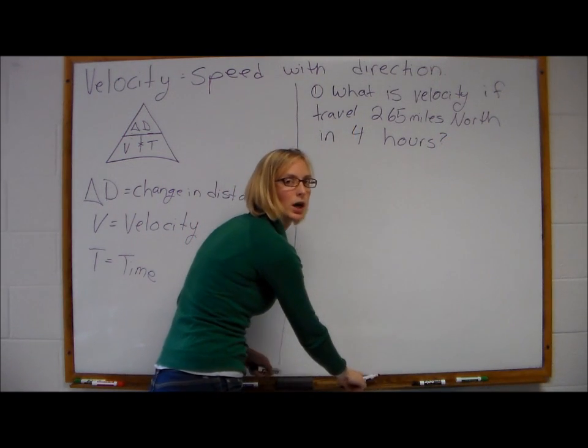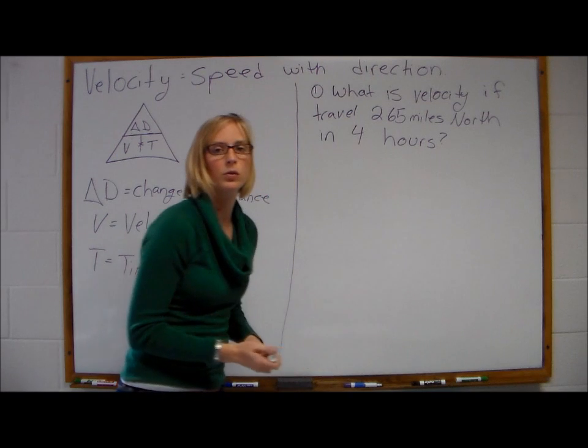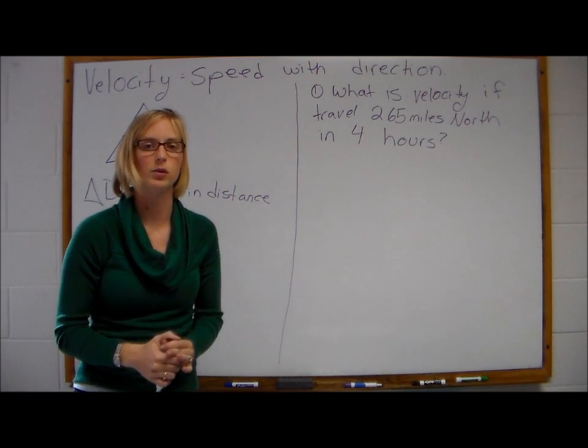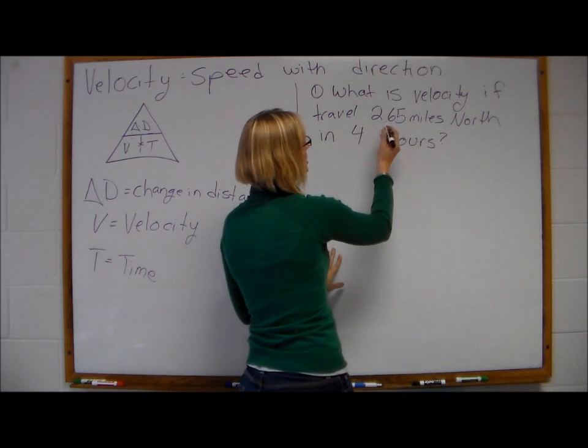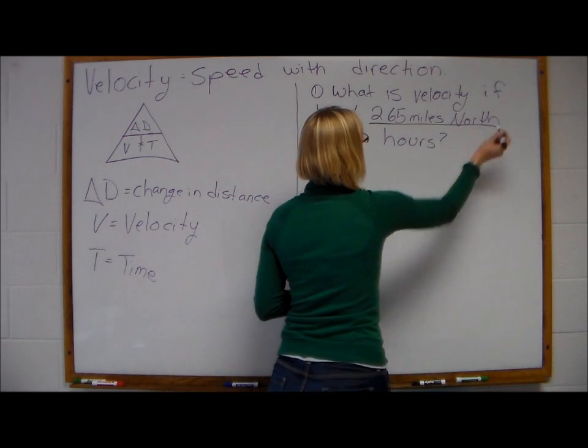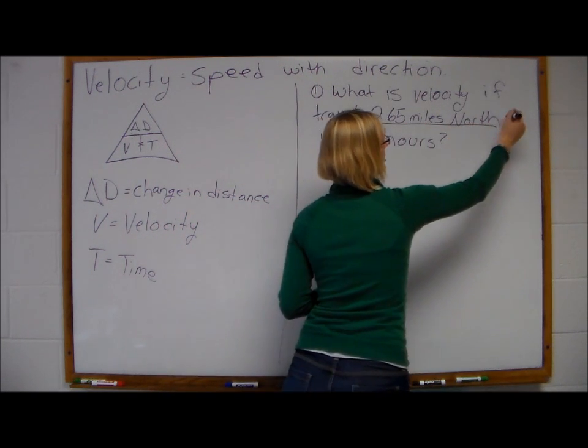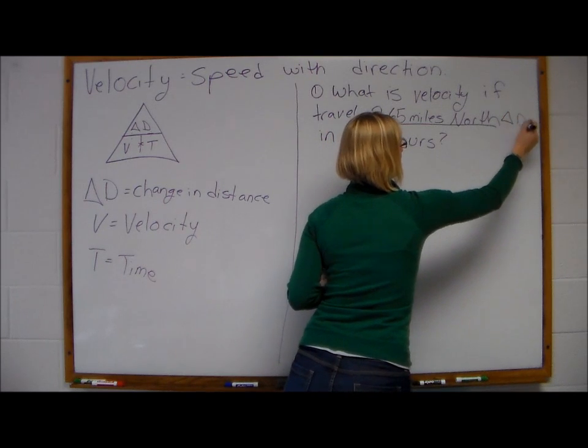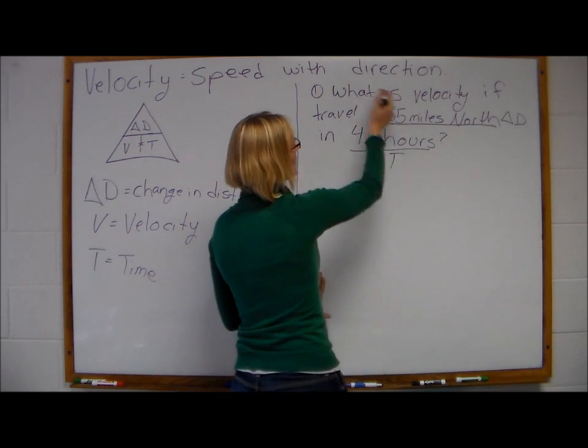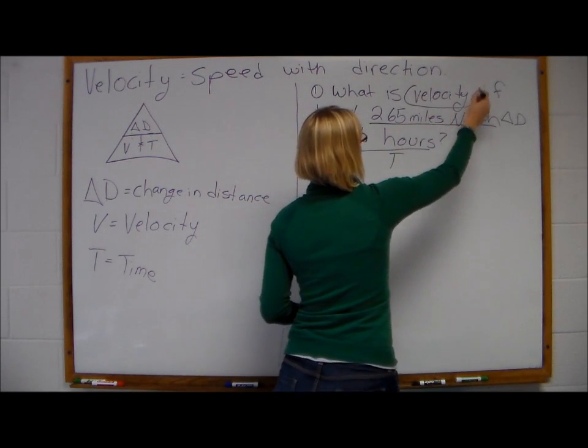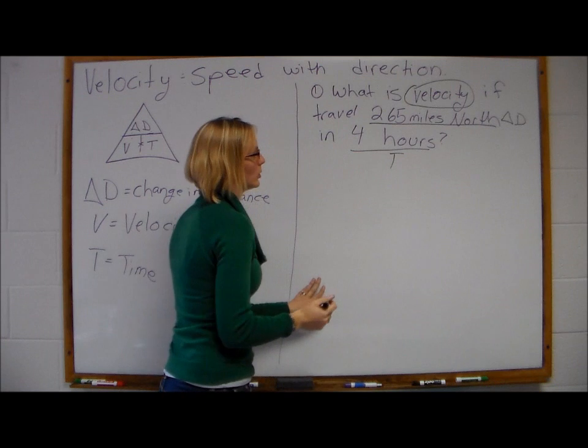Like before, we're going to underline what we know, label our variables, and then plug in our numbers. So we know we travel 265 miles north. We have our direction, so this is our delta D. We have 4 hours, this is our time. And we're asking what is our velocity? So this is what we're looking for.